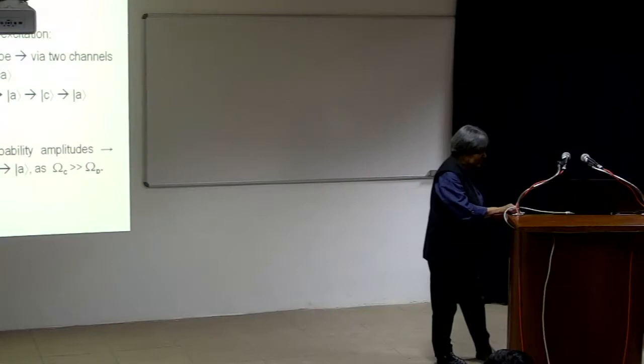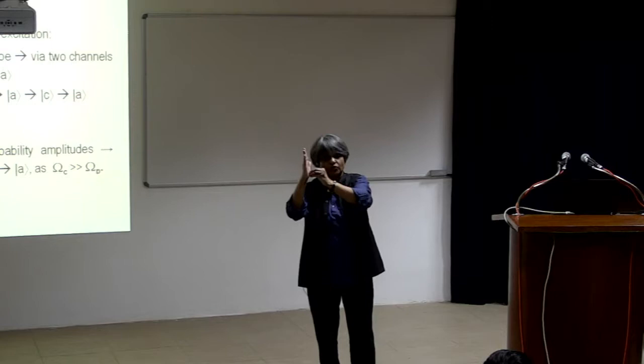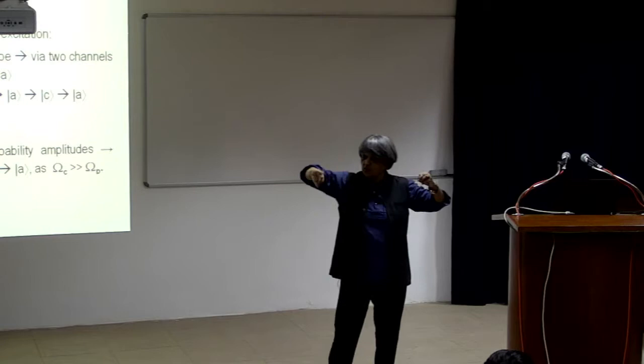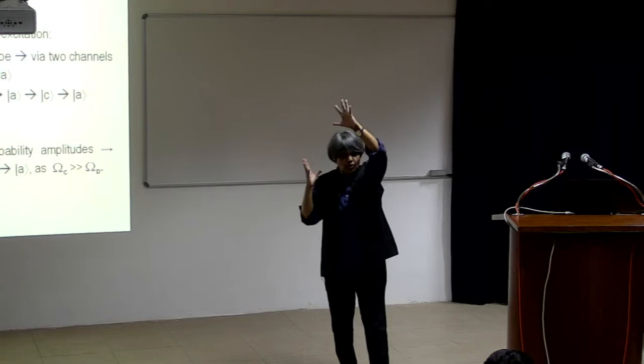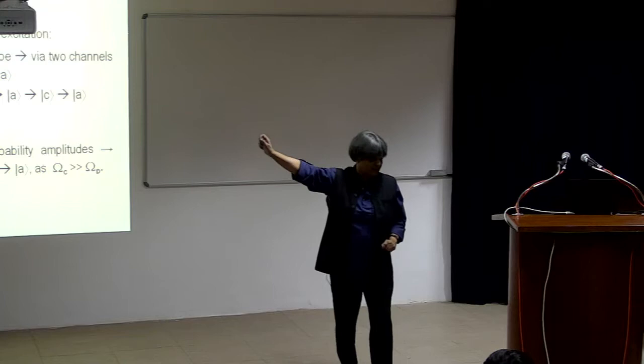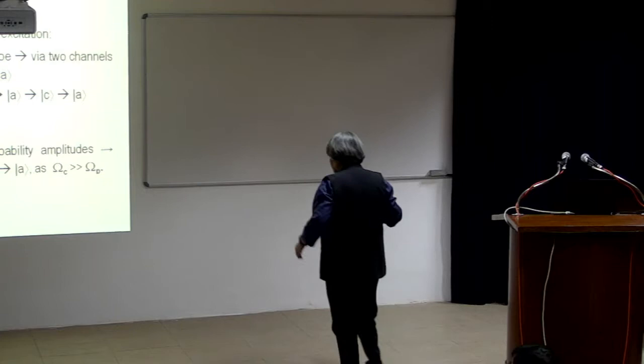Suppose, I close one hole and let light go through, on a particular spot, I am receiving light. Then I close the other one, I am also receiving light at the same spot. Now, I suddenly open both the slits, it could so happen depending on where I am looking that I get no light at all. Light plus light can be no light at all.